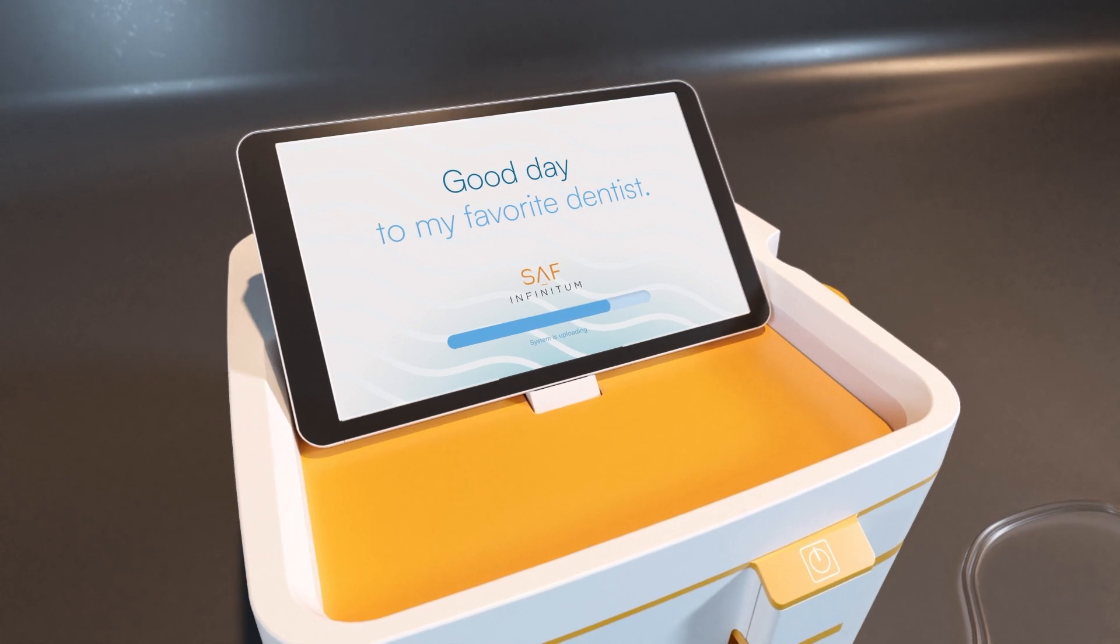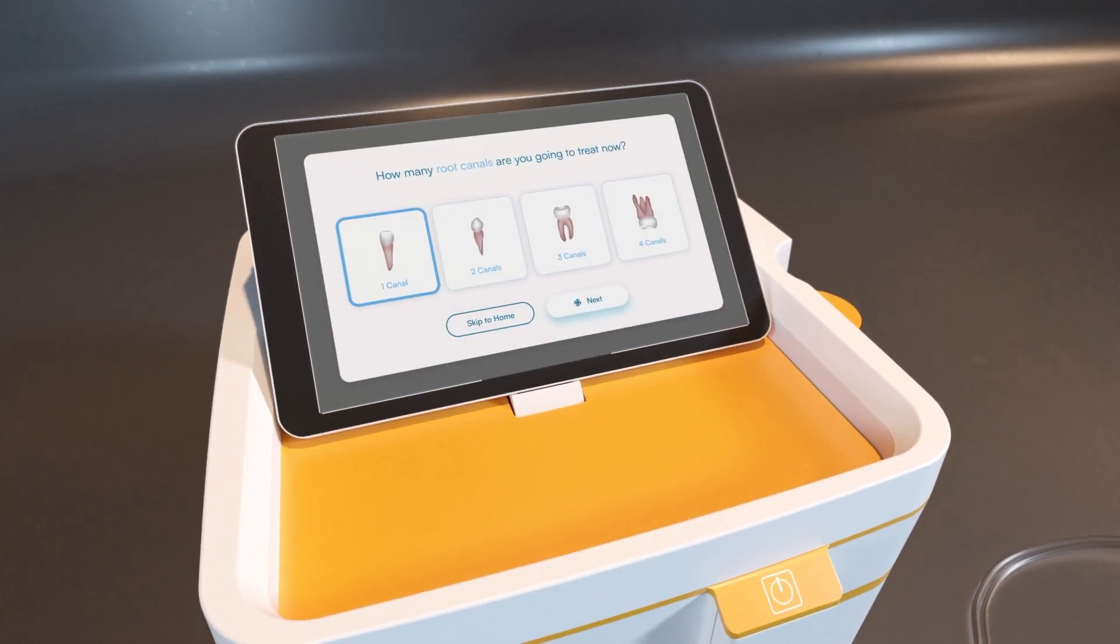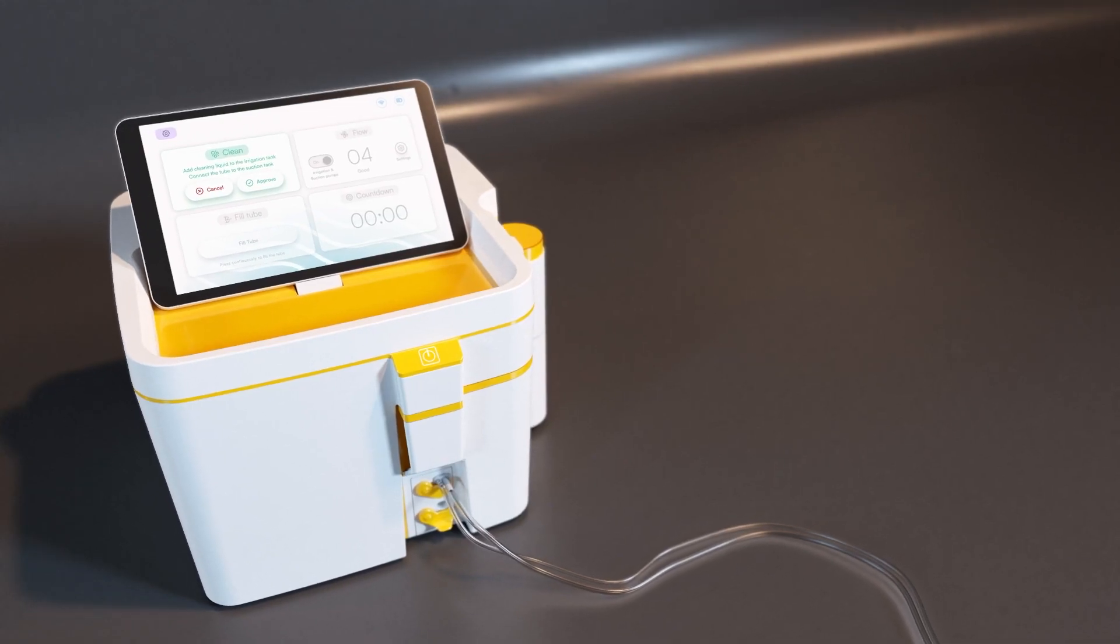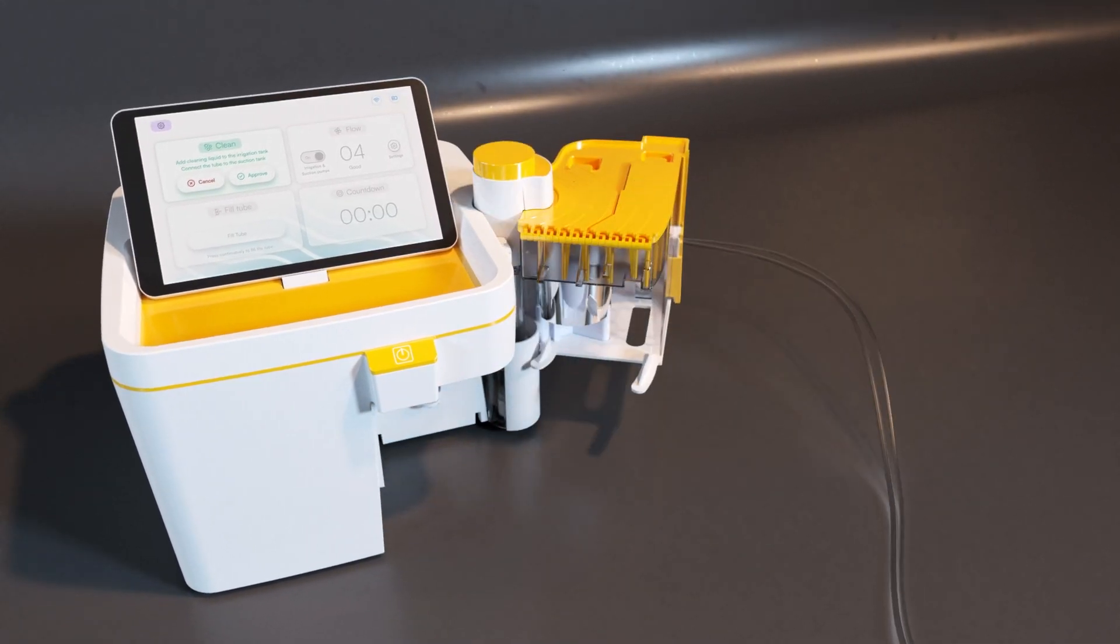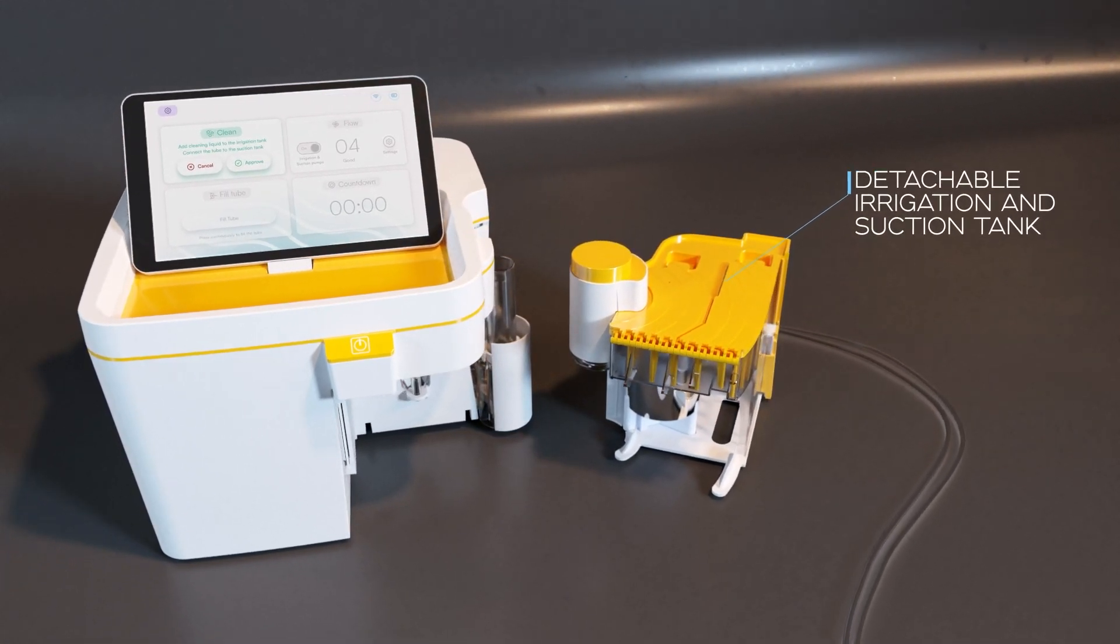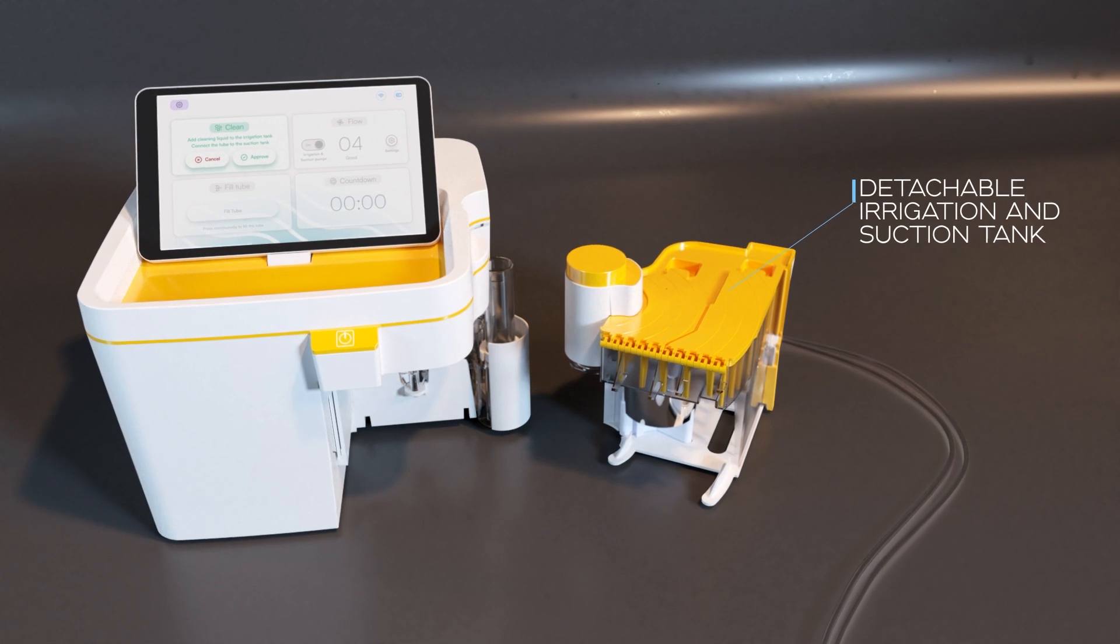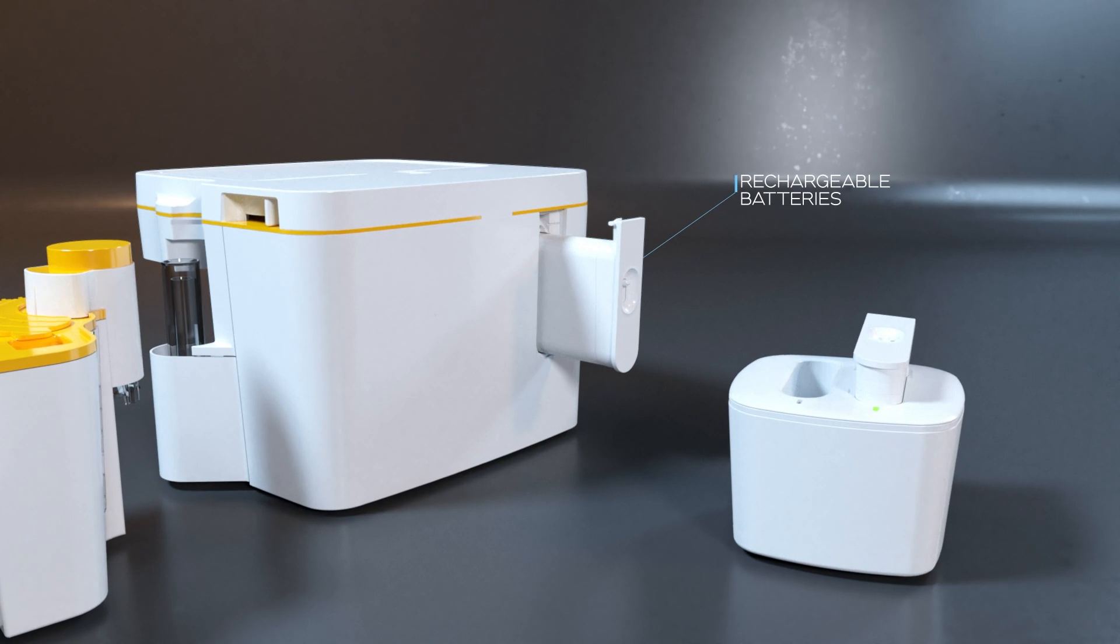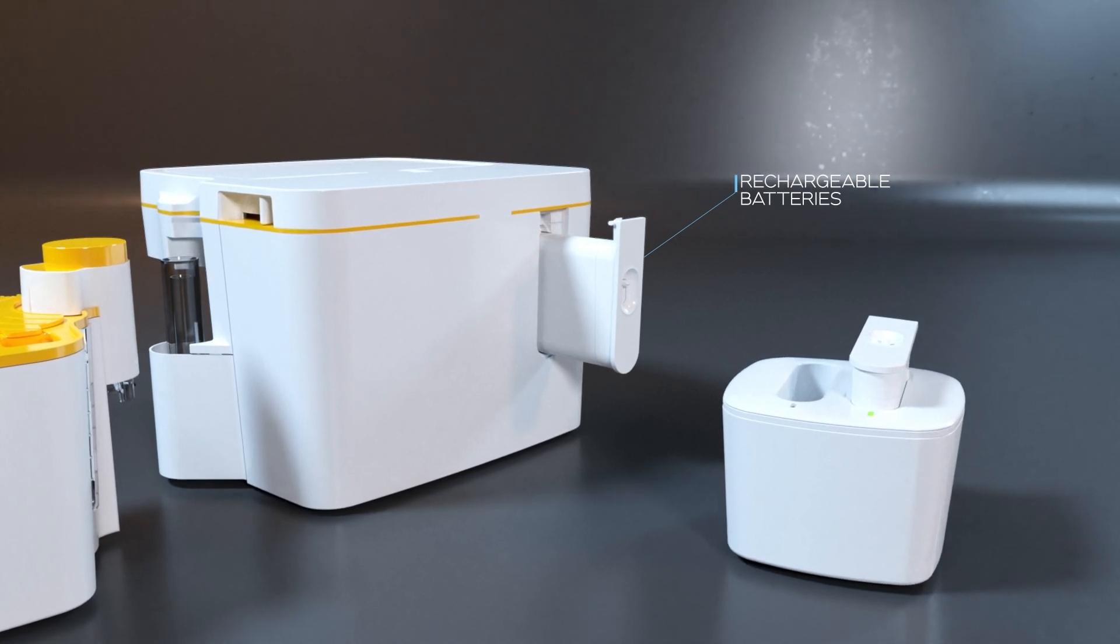An intelligent control center supervises the entire procedure by an intuitive graphic user interface. The main device has a detachable irrigation and suction tank apparatus with peristaltic pumps and is operated by a wireless signal from whichever motor is being used. It operates on rechargeable batteries and includes a self-cleaning mechanism for easy maintenance.